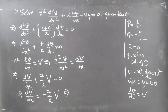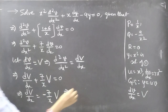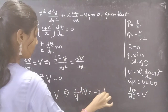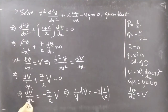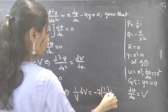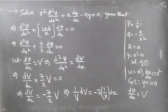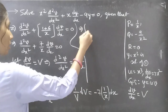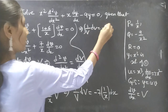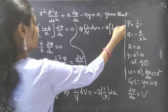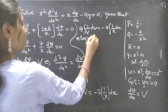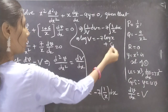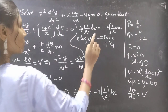Separating the variables: (1/V) dV = −7 · (1/x) dx. Since the variables are separable, we integrate both sides: ∫(1/V) dV = −7 ∫(1/x) dx. This gives log V = −7 log x + c₁, where we write c₁ as log c₁.